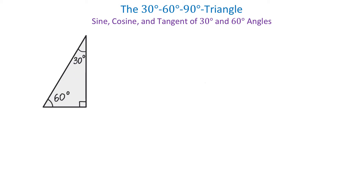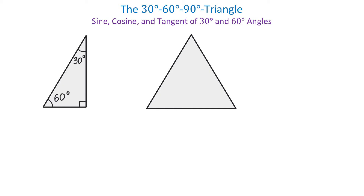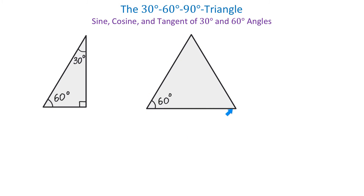Let's draw an equilateral triangle. In this triangle, all three sides are equal. And in an equilateral triangle, not only the sides are equal, but all three angles are also equal. Because the sum of all three angles in any triangle is 180 degrees, then 180 degrees divided by 3 will give us 60 degrees. So each angle in this triangle has the measure of 60 degrees. Now let each side of this triangle have two units — we choose this number just for simplicity, and of course we could use any other number as well.